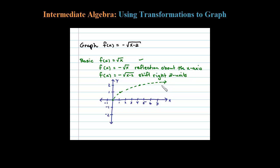Now let's do the reflection about the x-axis. Point (0,0) would still be a point. When I plug in 1, I'd get negative 1, and plugging in 4 I get negative 2. So when I reflect that about the x-axis, I get something that looks like this.